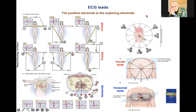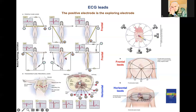We also discussed in previous parts that we use a positive electrode as the exploring electrode. For the 6 frontal leads, we have 6 cameras representing the 6 exploring electrodes — the positive electrodes in different leads. In Lead 1, the positive electrode is on the left arm. In Lead 2 and Lead 3, the left foot. For AVR, the right arm. For AVL, the left arm. For AVF, the left foot.